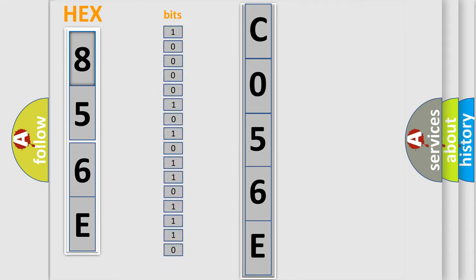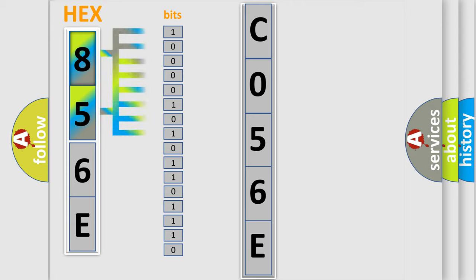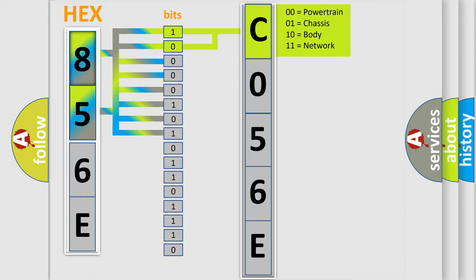One bit is the basic unit that each computer works with. The bit has two logical states: 0 (low level) and 1 (high level). By combining the first two bits, the basic first character of the error code is expressed.